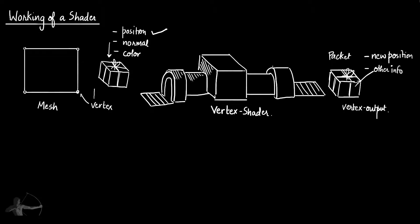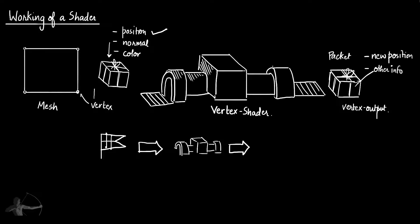One example of this is that in the later chapters of this series we will write a vertex animation shader. A flag which is composed of several vertices — we will pass these vertices one by one to the vertex shader with position data, and the vertex shader will give us animated positions. We will ask the vertex shader to shift the vertices based on the sine function and we will get a waving flag out of it. This is an example of changing the value of the position in the vertex shader.